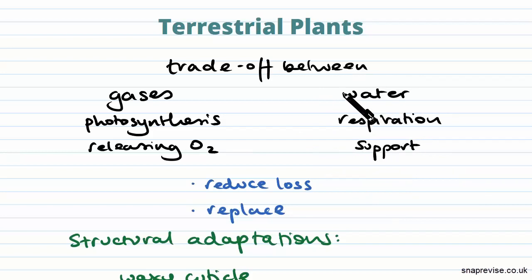Now unfortunately, gases can only enter and exit a plant through stomata, so they do need to be open, that's a requirement, which means that you're always going to have a bit of water loss. So it's important that terrestrial plants can reduce the loss of water and also find ways to replace the water.